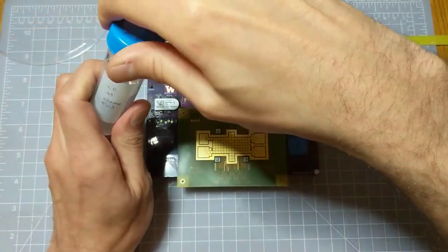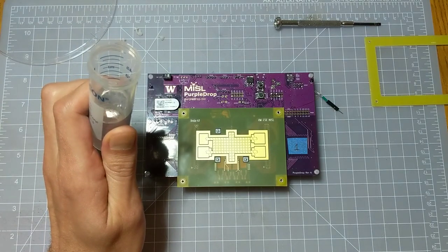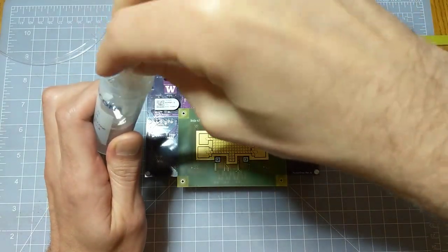Before attaching the mylar frame to the electrode board I put down a thin layer of silicone oil, it's 2 CST viscosity. I usually just do this with a kim wipe.